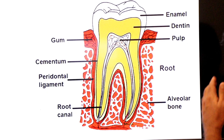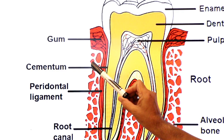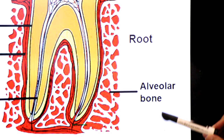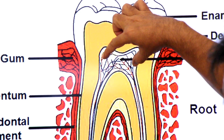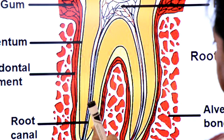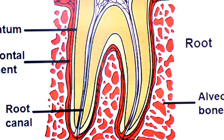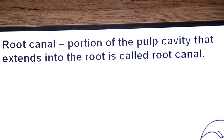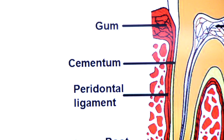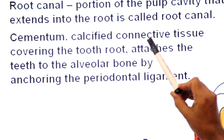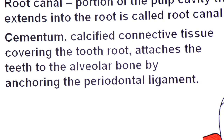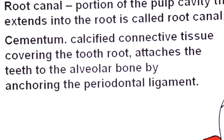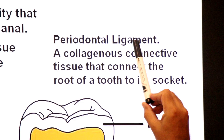In the root portion you can see cementum, periodontal ligament, root canal, and alveolar bone. The pulp, as it comes into the root, becomes narrower and forms a canal known as the root canal. The portion of the pulp cavity that extends into the root is called the root canal. Cementum is a calcified connective tissue covering the tooth root that attaches the teeth to the alveolar bone by anchoring the periodontal ligament.